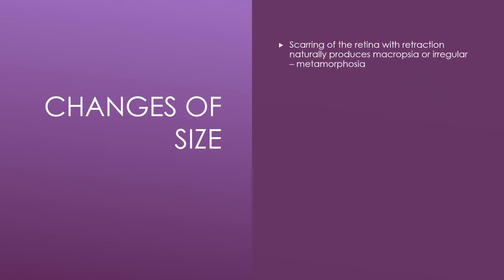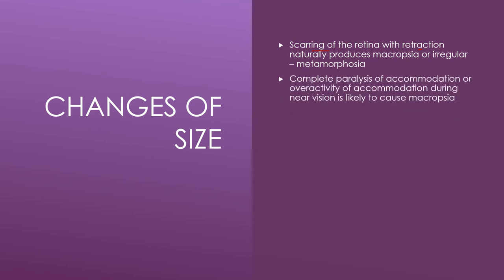Scarring of the retina with retraction naturally produces micropsia or irregular shapes due to shrinkage. Complete paralysis of accommodation — such as from atropine eye drops or stroke affecting the iris muscles — means the lens cannot accommodate properly, causing problems in the perceived size of objects. Partial paralysis of accommodation leads to the experience during near vision that an object appears even nearer.